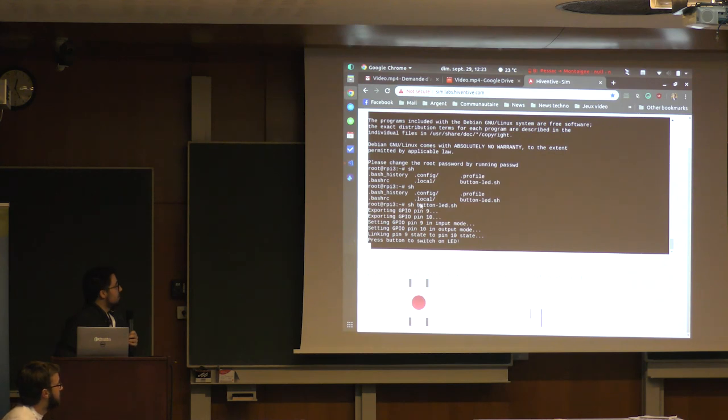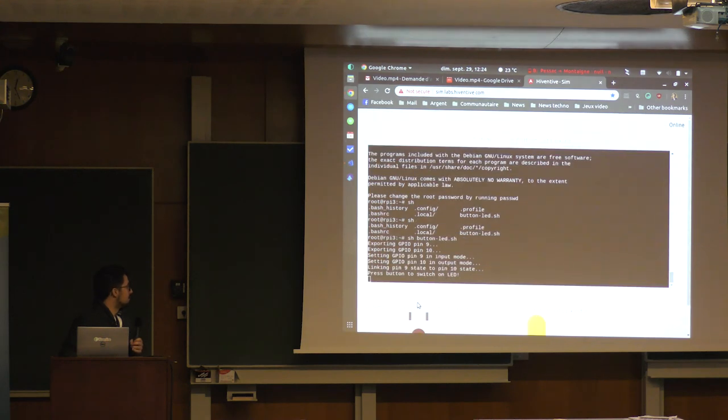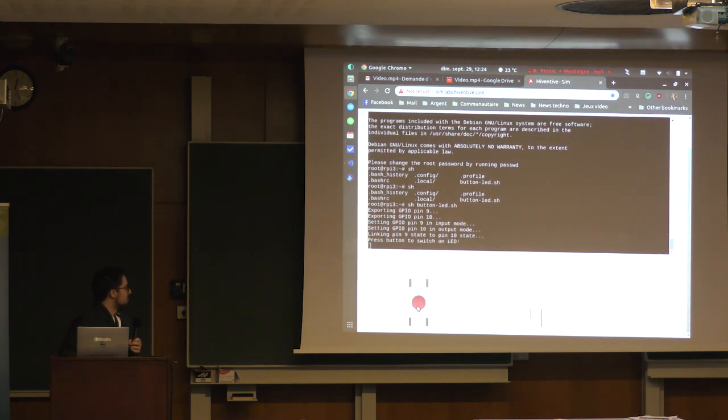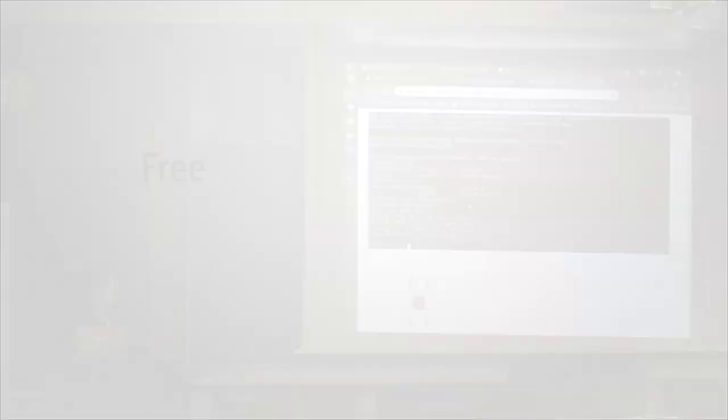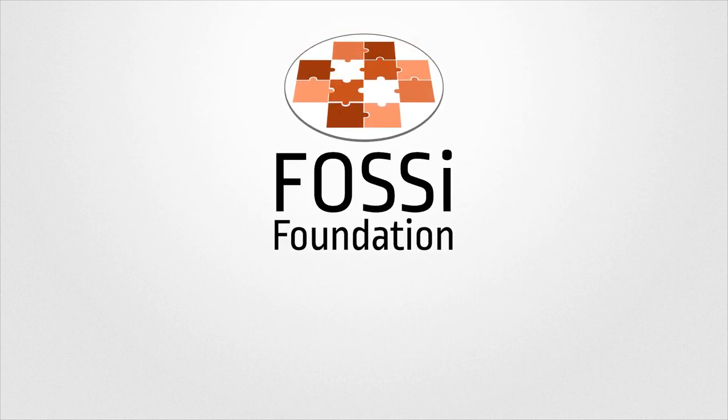So here I just run on the Debian 9 a script which makes an export of GPIO pins 9 and 10, so on the GPIO which are on SystemC. So the one on the button in input mode, the other in output mode, and then there is just a loop which is copying the state of the button on the LED pin. And so, you see, it just works. Thank you. Thank you.